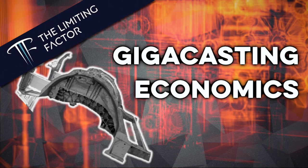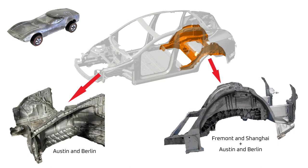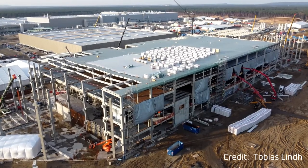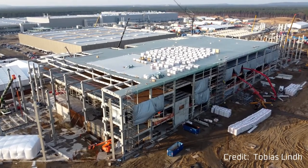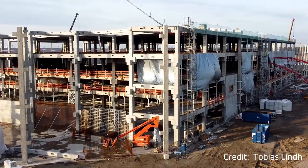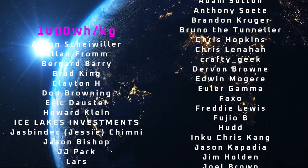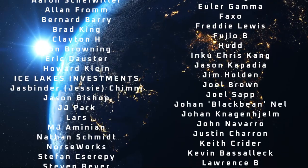If you'd like to know more about the economics of Gigacasting, check out my Gigacasting Economics video. The next video of the Gigacasting series will be my speculation on how the Gigacasting will marry with the exoskeleton of the Cybertruck. The Cybertruck won't be using a traditional body-on-frame or unibody design — it's something new altogether. If you enjoyed this video, please consider supporting me on Patreon or as a YouTube member. A special thanks to my YouTube members and all the patrons listed in the credits. I appreciate all your support and thanks for tuning in.